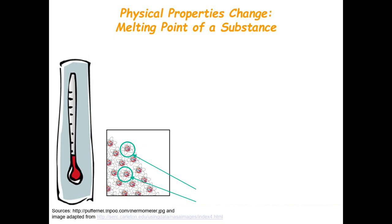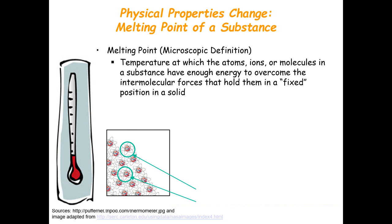What about physical properties — do they change or remain the same? Just like we mentioned about electrical properties, physical properties also change. A good example of physical properties is the melting point. The macroscopic definition of melting point is: it is the temperature at which atoms, ions, or molecules in a substance have enough energy to overcome the intermolecular forces that hold them in a fixed position as a solid.